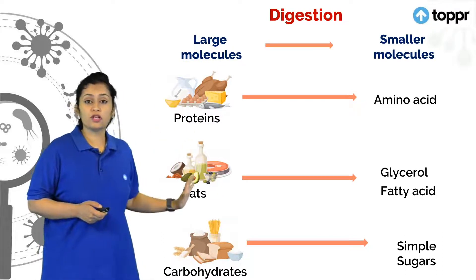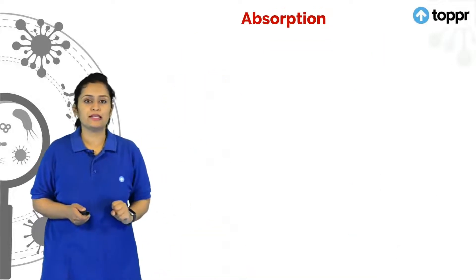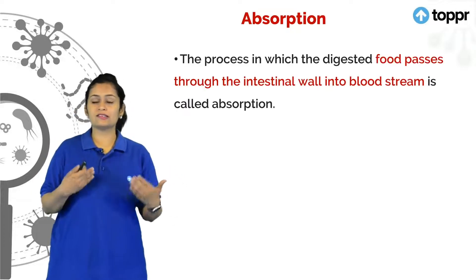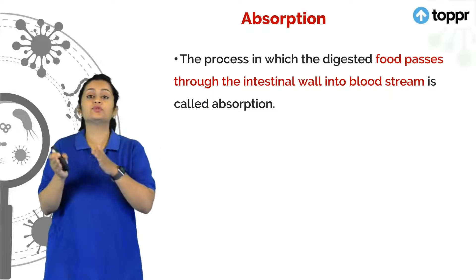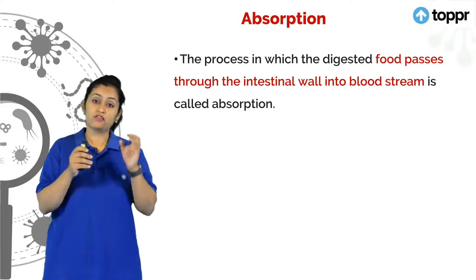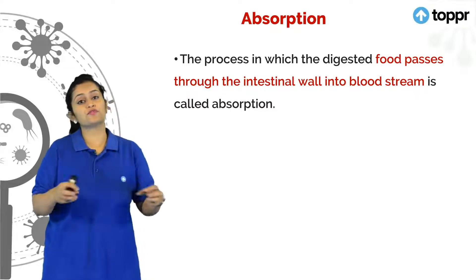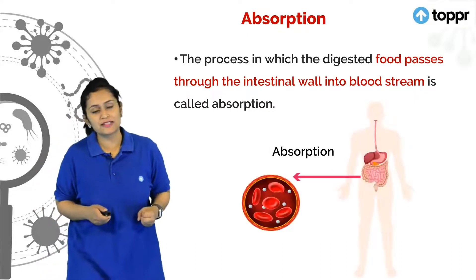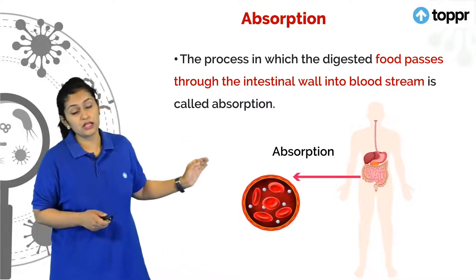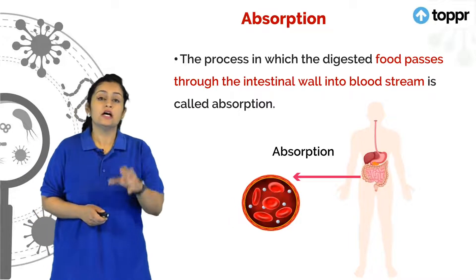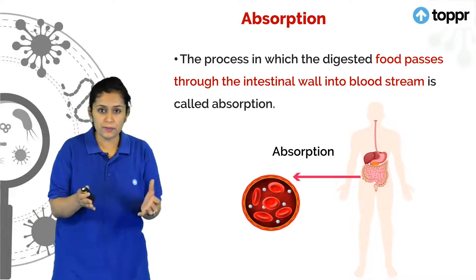Once complex molecules are converted into simple molecules, they are absorbed. The digested food passes through the intestines, and through the intestinal wall these small molecules are absorbed into our bloodstream. This process is known as absorption — the food passes through the intestinal wall into the bloodstream.